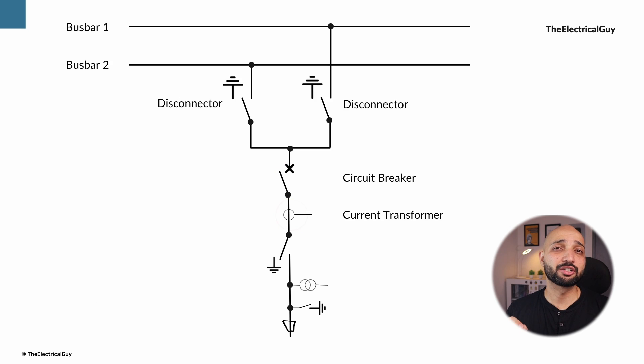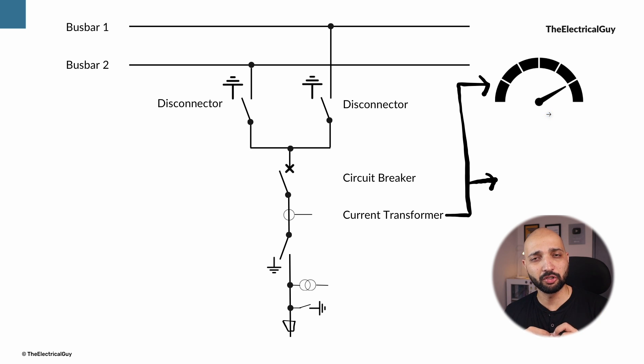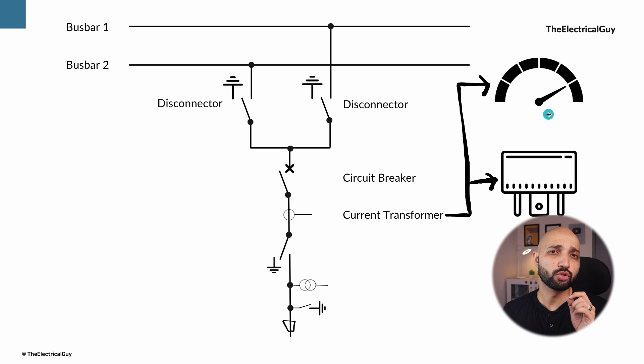Next we have a current transformer. The function of current transformer is to measure the current flowing and also to monitor the current in the system. Current transformer has two different types of cores: metering and protection. The input of metering core goes to the meter for measurement purpose, and the input of protection core goes to the relay which senses the high current and gives the command to circuit breaker to trip or open.